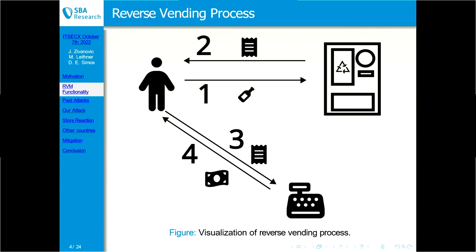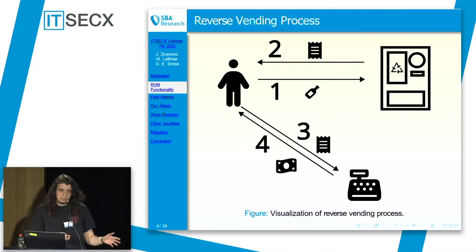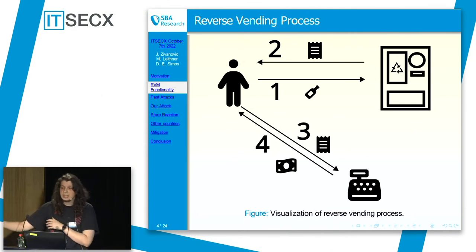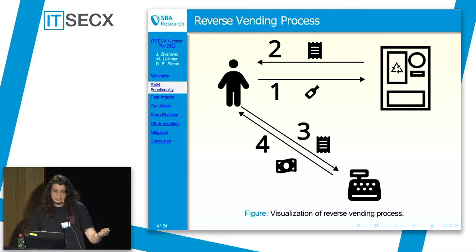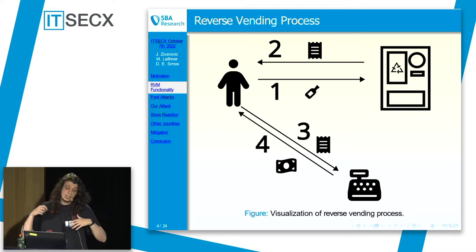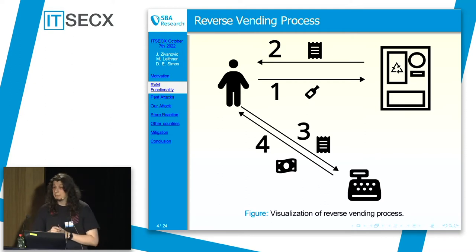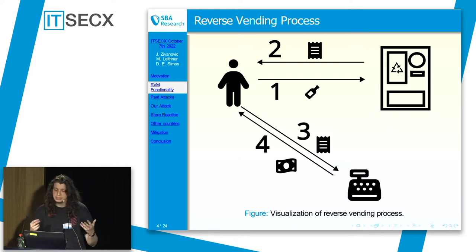How does this process look? I think most of you are familiar with it. You take your empty bottle, put it on the machine's conveyor belt, it takes the bottle, you press a button, get the receipt, and take the receipt to a cash register. You can get the money in cash or deduct it from your purchase total.